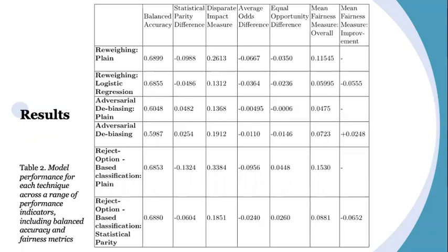This table shows a summary of the results when applying the three techniques compared to their corresponding plain models. Each technique is represented by the version which outperformed all the others for the dissecting bias dataset. For example, reject option included three different versions, each conditioned on a different fairness metric, but the version conditioned on statistical parity was the one which performed with optimal fairness. The first column shows model accuracy and the remaining columns show model fairness in terms of the deviation from an ideally fair value of zero. A deviation of more than 0.1 from the ideally fair value, and 0.2 for disparate impact, is considered to be an unacceptable level of discrimination. The mean fairness measure was calculated to assess the overall fairness of the model and the improvement in fairness from a plain model.